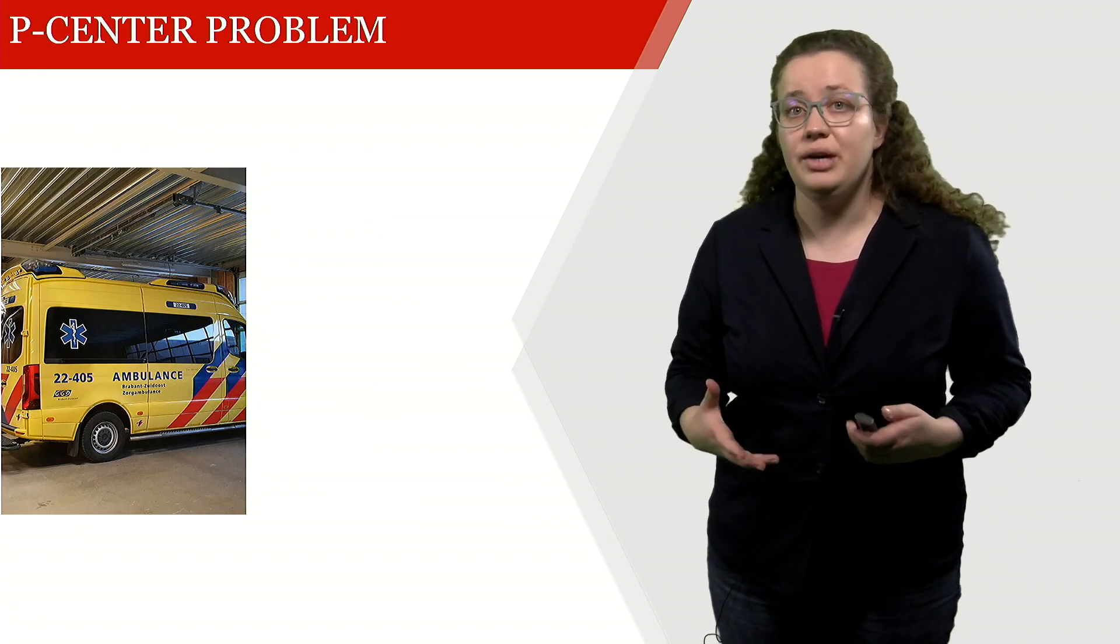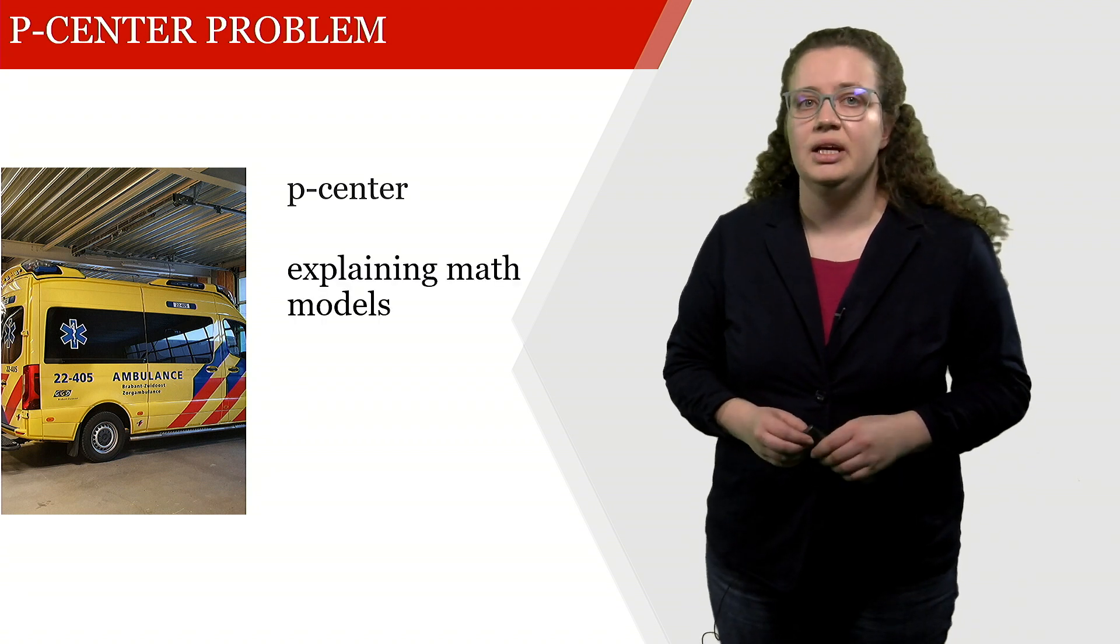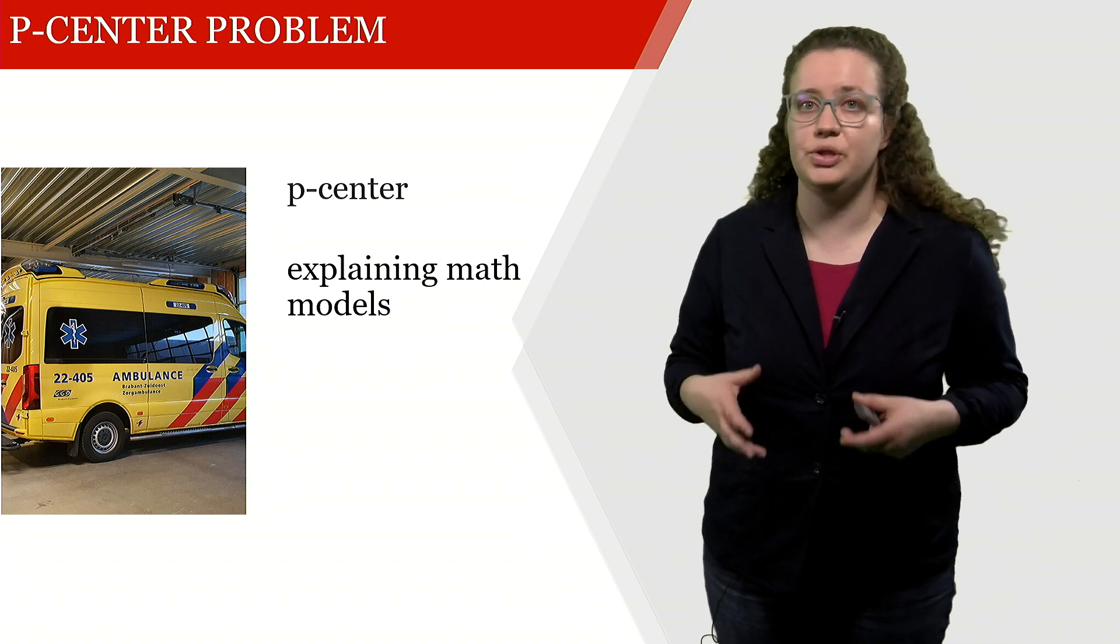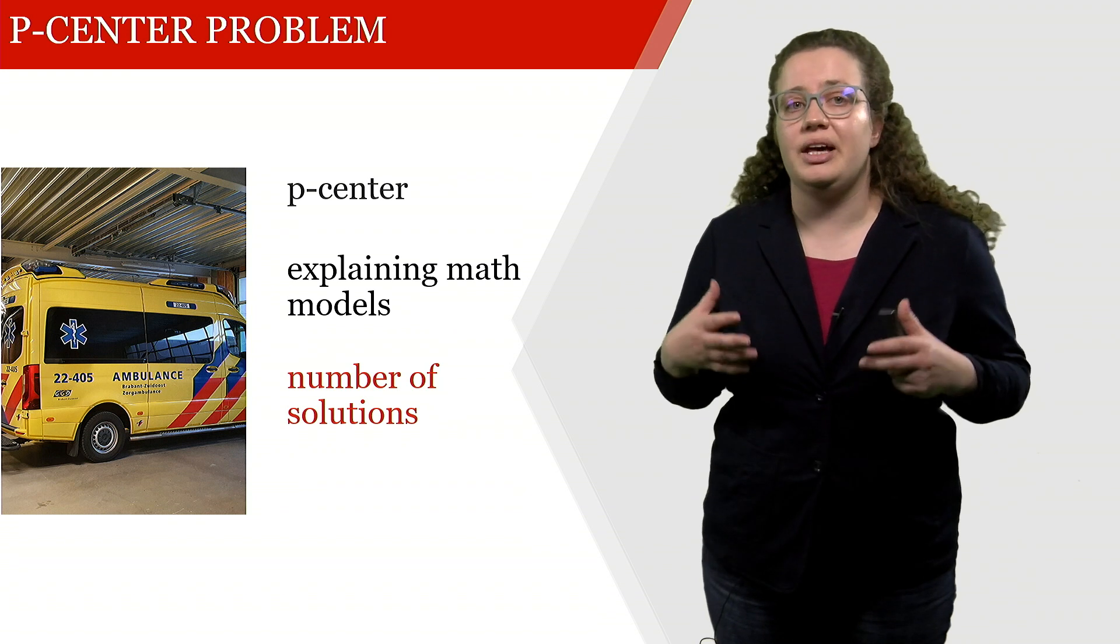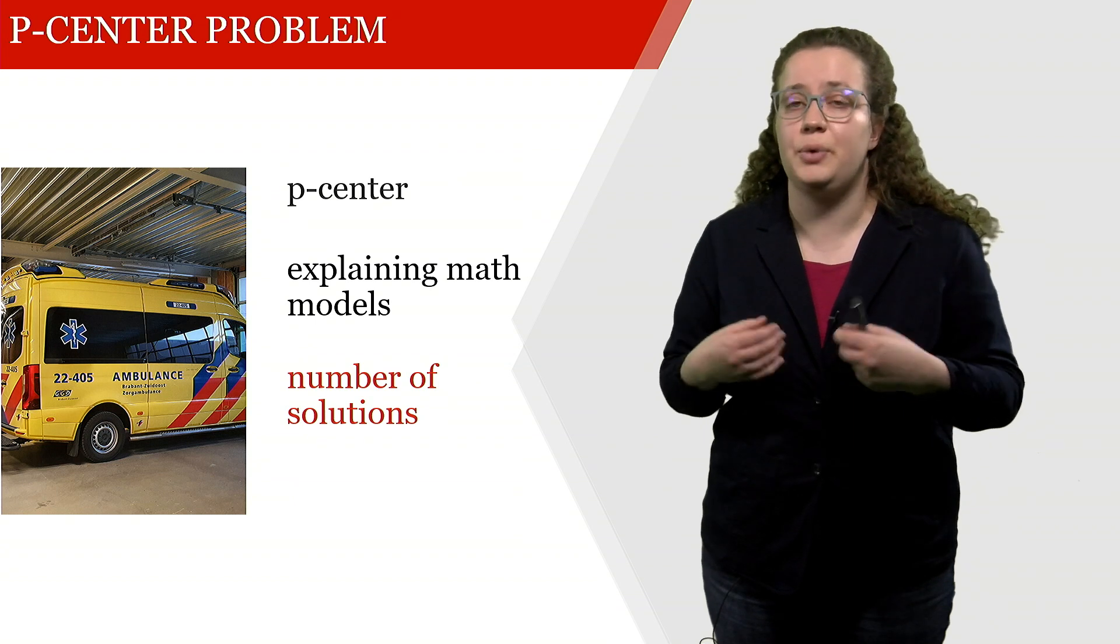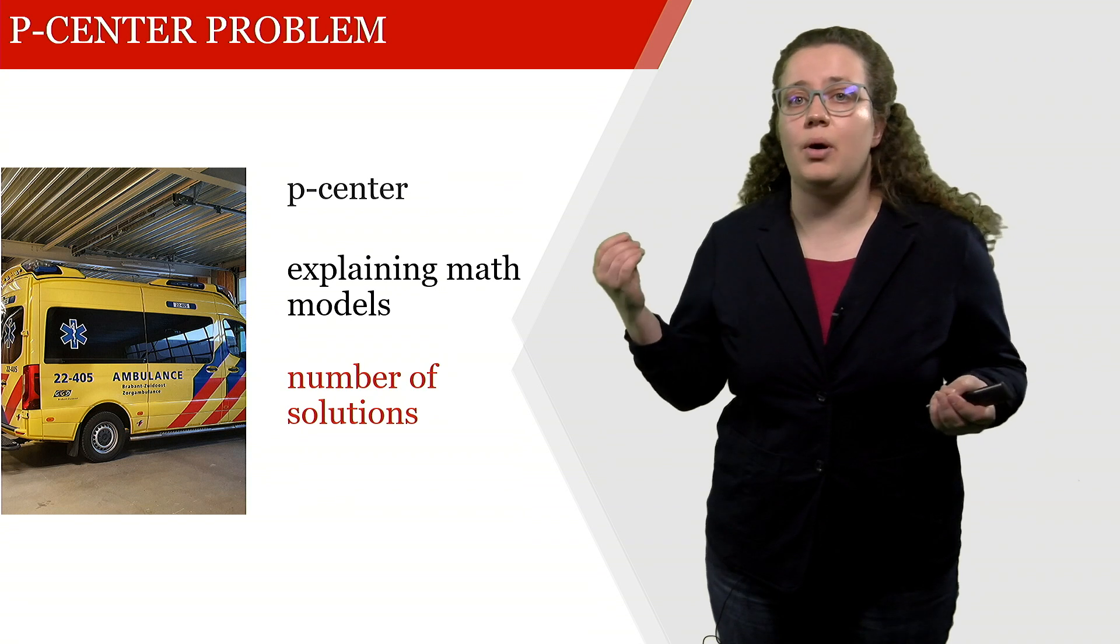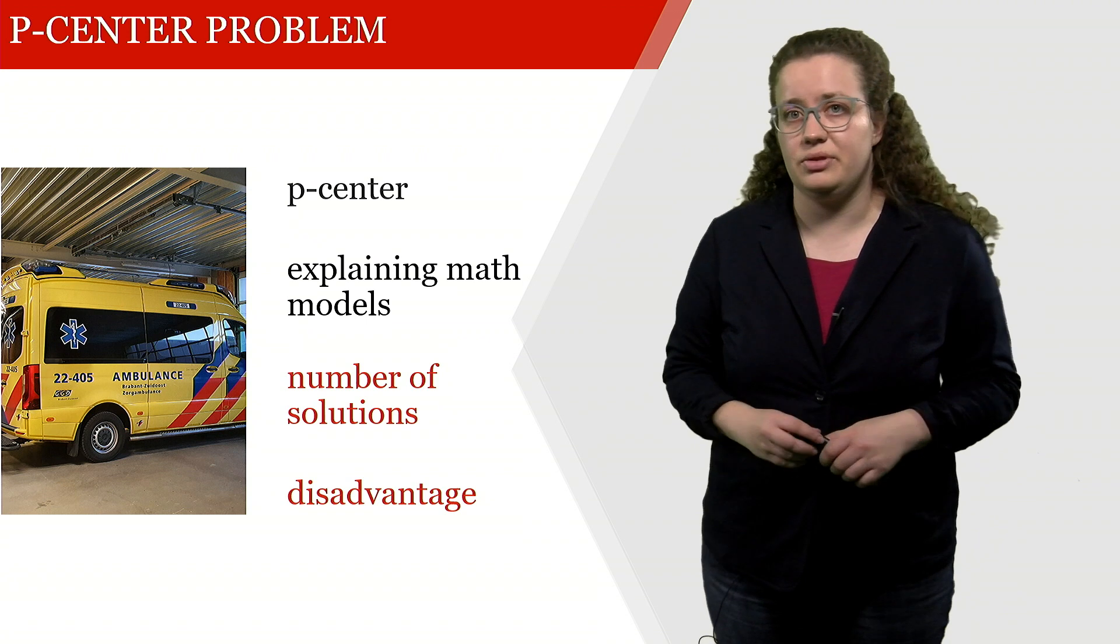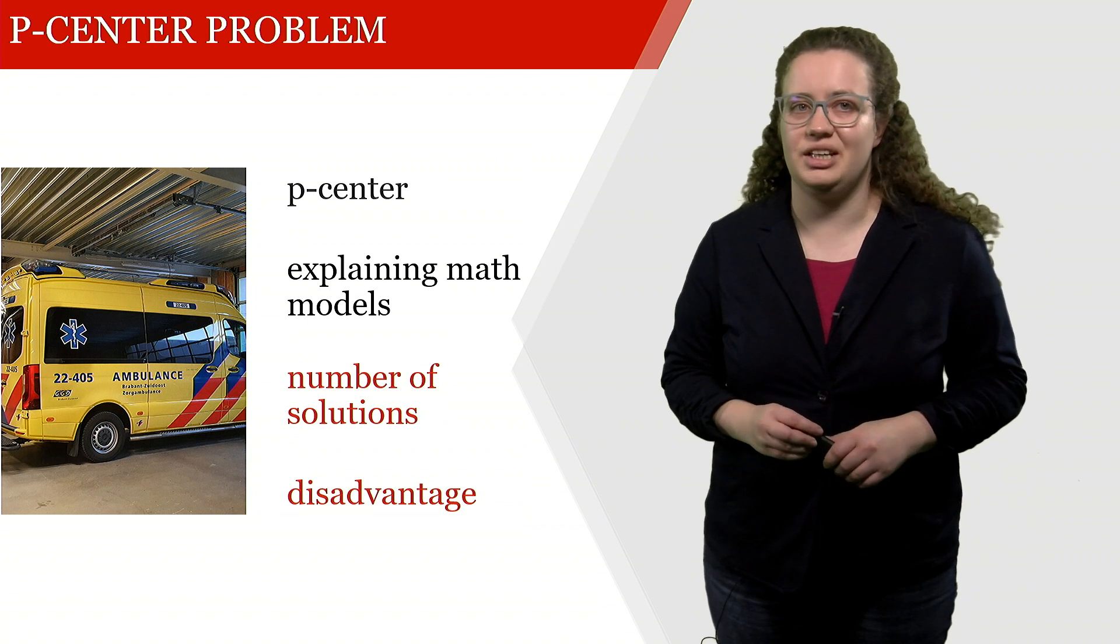What I would like you to take away from this web lecture is first of all what the p-center formulation looks like. Secondly, I would like you to take away how to explain mathematical models if you don't know exactly what they're actually doing. What I would like you to look into is first of all the number of solutions. So how many possible assignments do I have if I would like to open N ambulance locations among a set of candidate locations. And lastly, I would like you to think about the disadvantage when considering service quality of the objectives that we just saw. Thank you very much.